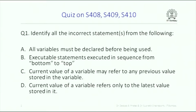Now we start our quiz questions. The first quiz says: identify all incorrect statements from the following. There are four statements — A, B, C, D. First: all variables must be declared before being used. Second: executable statements are executed in sequence from bottom to top. Third: current value of a variable may refer to any previous value stored in the variable. Fourth: current value of a variable refers only to the latest value stored in it. Out of these, which are right and which are wrong?